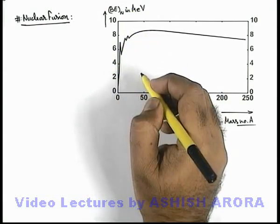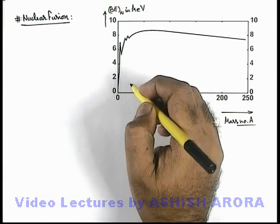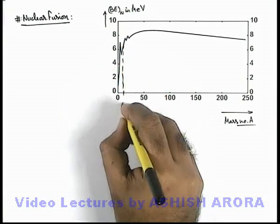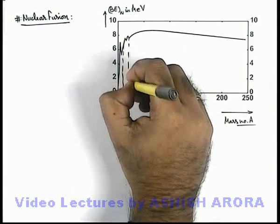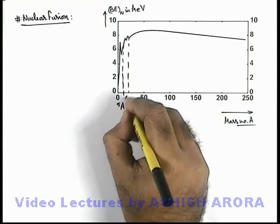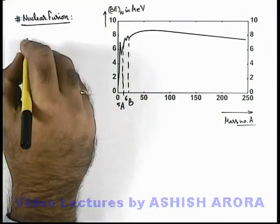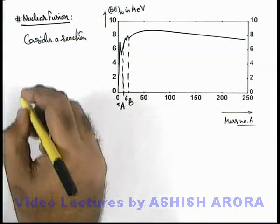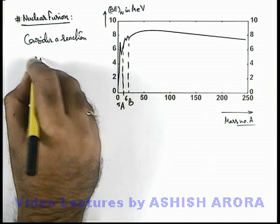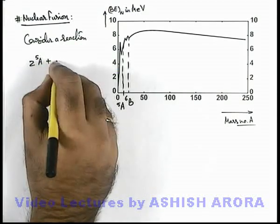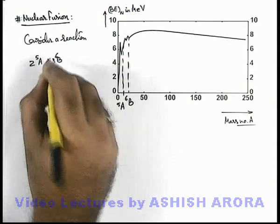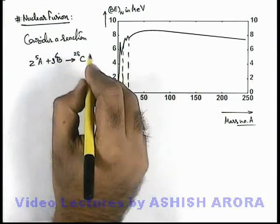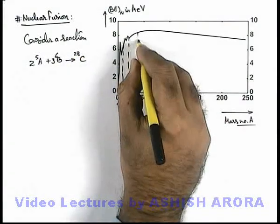And here to understand this fusion, let's consider a reaction in which we consider a nucleus A which is having mass number 5 and another nucleus B which is having mass number 6. If we consider a reaction in which 2 nuclei of A fuse with 3 nuclei of B and it gives a nucleus C, so here you can see the total number of nucleons will be 28. So C would be lying somewhere here.